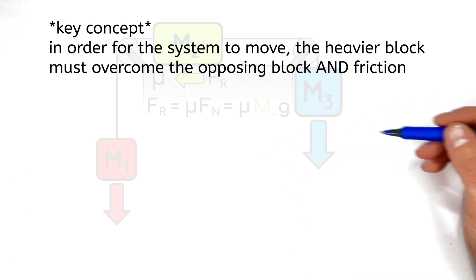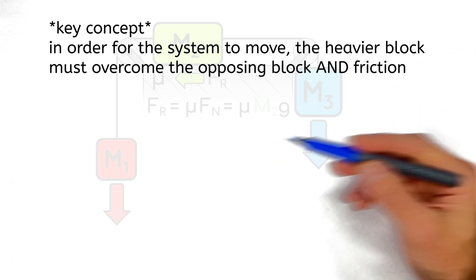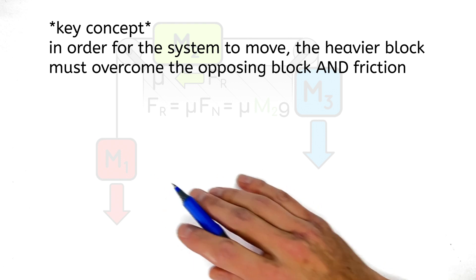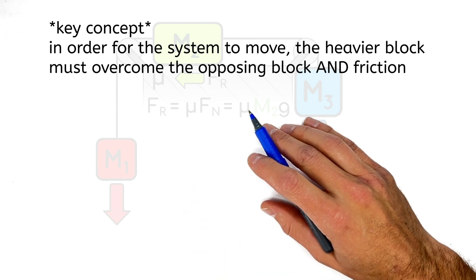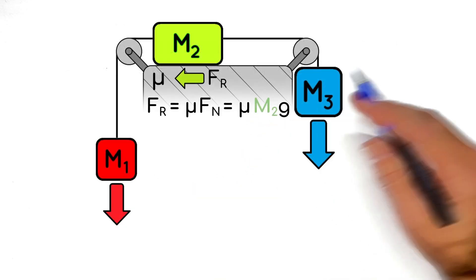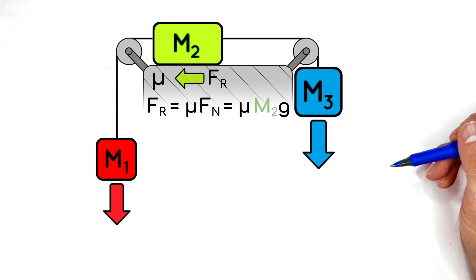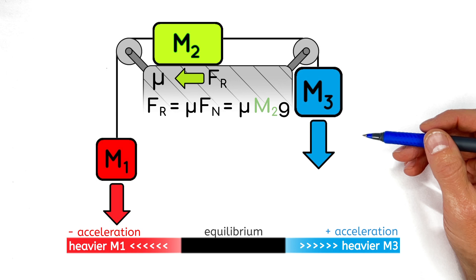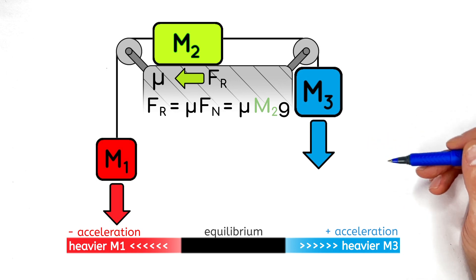When we add in friction to this problem, the heavier of the two hanging blocks not only has to overcome the weight of the opposing block, it also has to overcome the force of friction right here as well. And what that means for us is rather than having equilibrium only occur when these masses are perfectly equal, there's actually a range of masses over which absolutely nothing's going to happen.